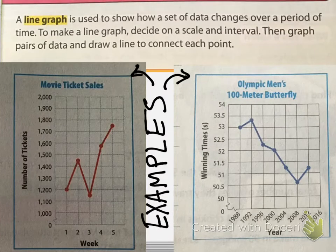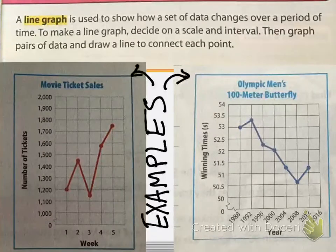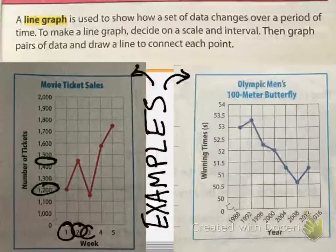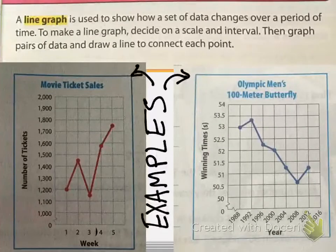Here's an example of movie ticket sales and one of Olympic men's 100-meter butterfly. For example, one point has x equal to one and y equal to 1,200. The next is two at about 1,450, and three is at 1,150. We plot those points and then connect them together like a connect-the-dots.